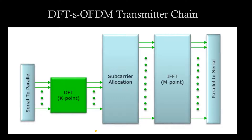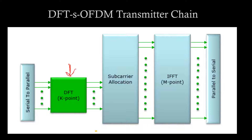Now let's understand the DFTS OFDM transmitter chain, which will be important to understand if you want to learn more about the DFTS side. You can also look into my previous video on the fundamentals of DFTS OFDM — I'll give a link in the description and you can click the 'i' button. To summarize, there are two key changes: one is having an extra DFT block, and another is having a subcarrier allocation block.